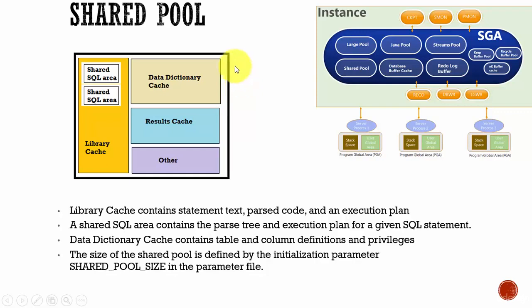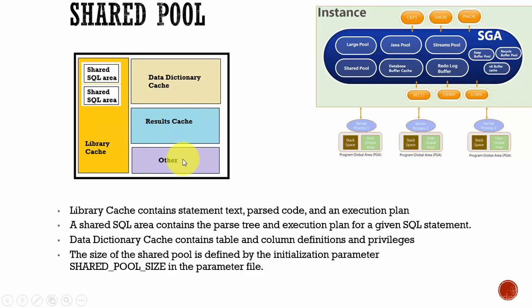In this session, let's learn about Shared Pool. Shared Pool is another important memory structure of your System Global Area. Shared Pool contains your library cache, data dictionary cache, results cache, and some other memory structures to store your parallel execution messages and control structures. The three important memory structures of Shared Pool are Library Cache, Data Dictionary Cache, and Results Cache.